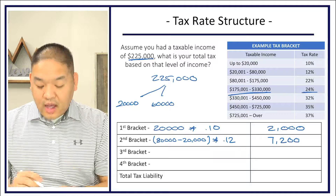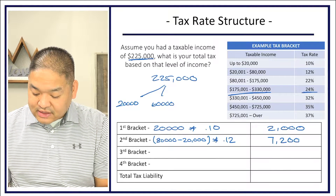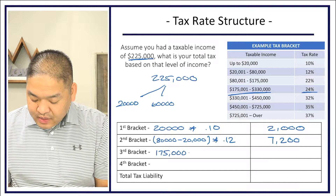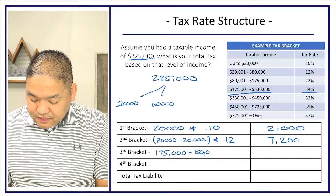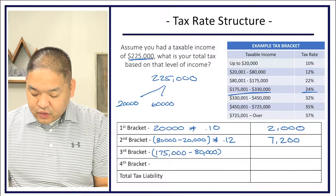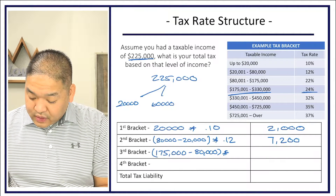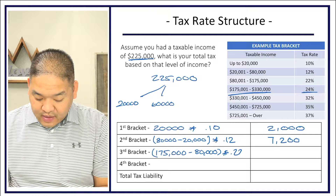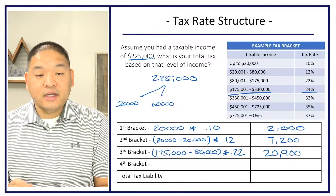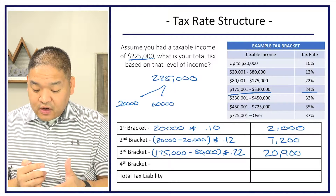The next bracket is $80,000 to $175,000. So $175,000 minus $80,000 gives us $95,000, times the 22% tax rate, which gives us $20,900. Then the final bracket — since $225,000 falls between $175,000 and $330,000, we don't take the full range up to $330,000.